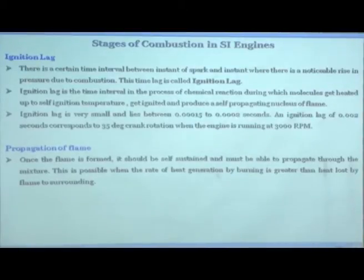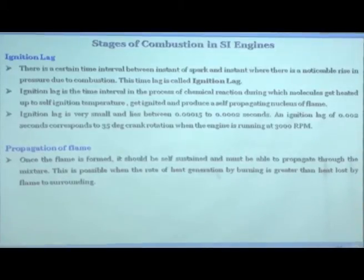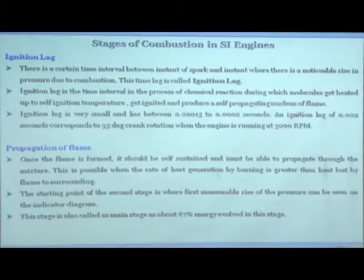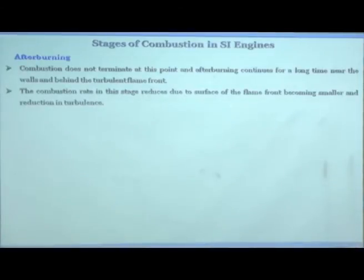Once the flame is formed, it must be self-sustaining and able to propagate through the mixture. This is possible when the rate of heat generation by burning is greater than the heat loss from the flame to the surroundings. The moment heat loss exceeds heat generation, the flame extinguishes. The second stage — where the first noticeable rise in pressure is seen — is called the main stage, and about 80 to 90 percent of the energy is released here. After-burning continues for a longer time near the walls or behind the turbulent flame fronts, releasing the remaining 10 percent of heat.